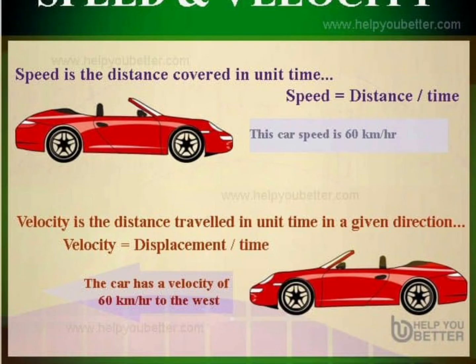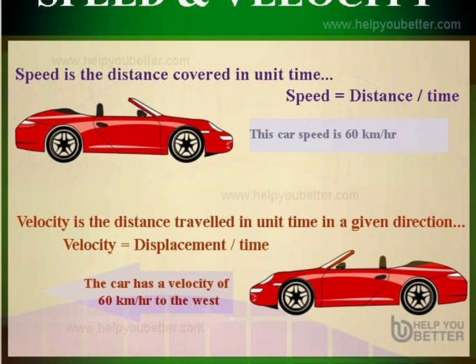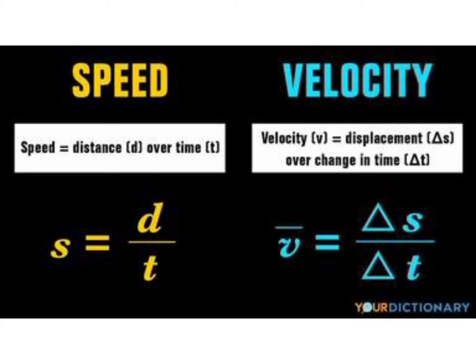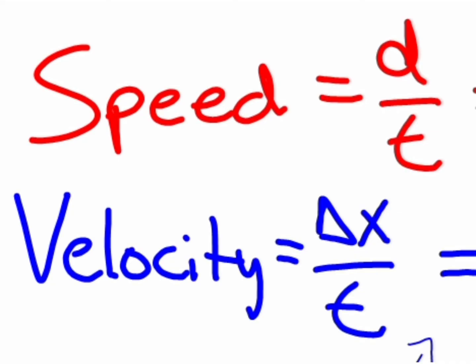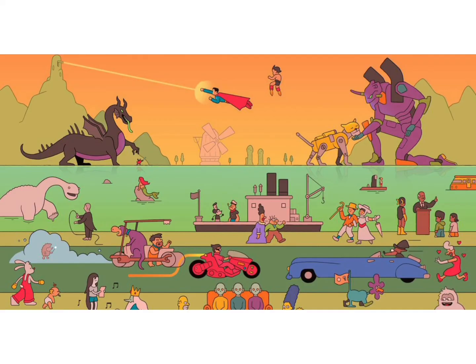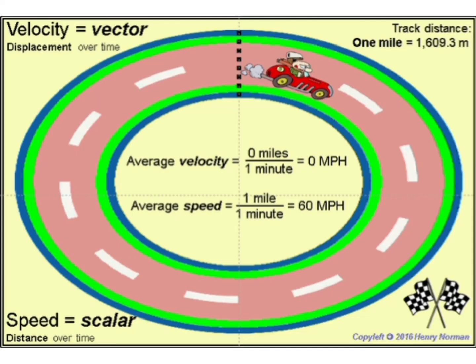So the velocity of the boy is displacement upon time taken: 0 meters upon 100 seconds equals 0 meters per second. The average speed is 2 meters per second, but his average velocity is 0 meters per second. In this case, the magnitude of speed and velocity of the boy are not equal. This is an unusual situation — it has happened because the boy has not moved in a single straight line; he changed his direction of motion after reaching the shop. The difference in the value of speed and velocity arises only when a body does not move in a single straight line.